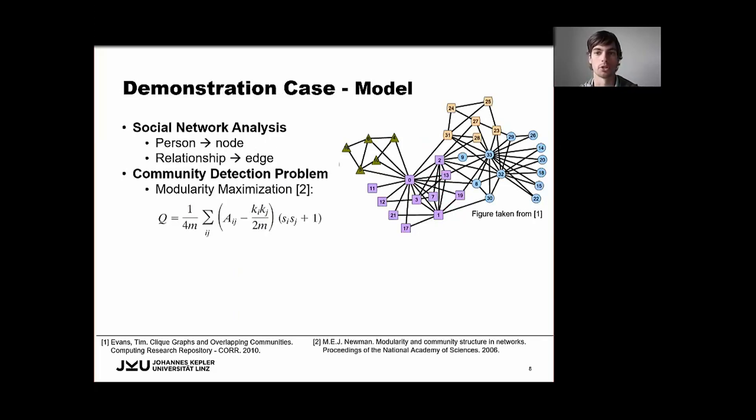We have created a small demonstration case, which will really just serve as a first insight on what is necessary to port the existing DSMLs to quantum computing. And therefore we have chosen the problem domain of social network analysis, or more specifically community detection in such networks. So when we look at this graph representation at the right, this represents a social network and each node represents a person and each edge represents a relationship between two people.